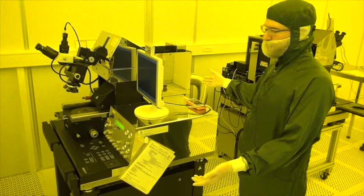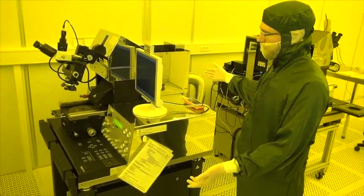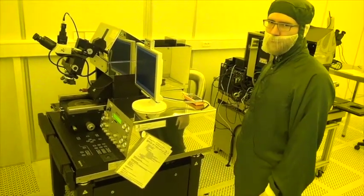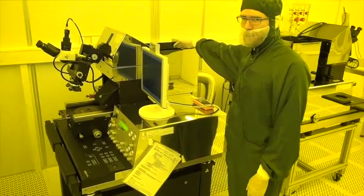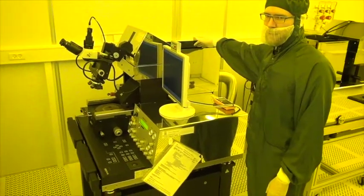This is the liner MA62 and I will start by giving you an overview of the equipment. Back here we have the lamp house. This is where the exposure light is generated.